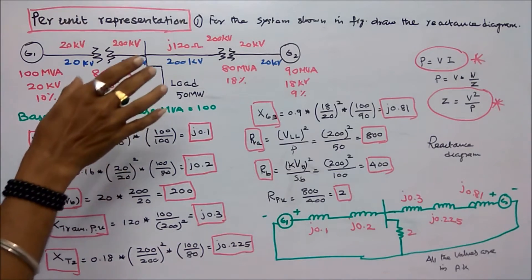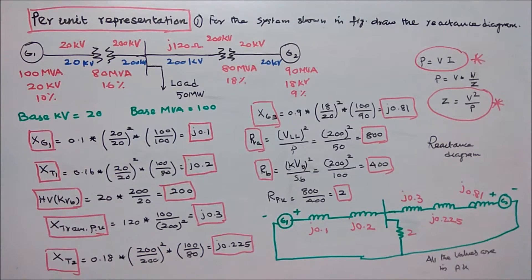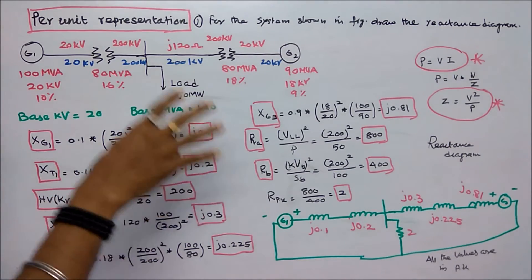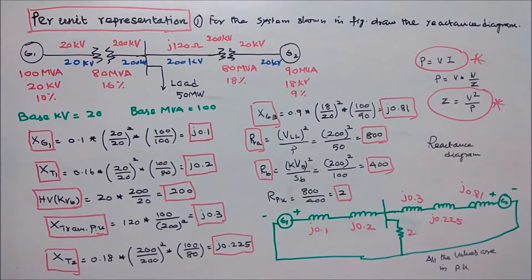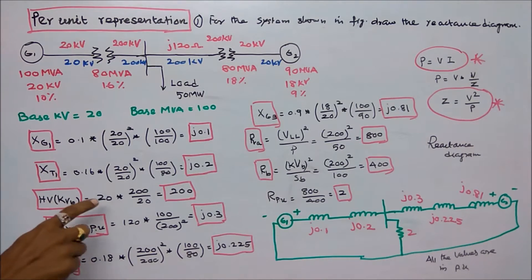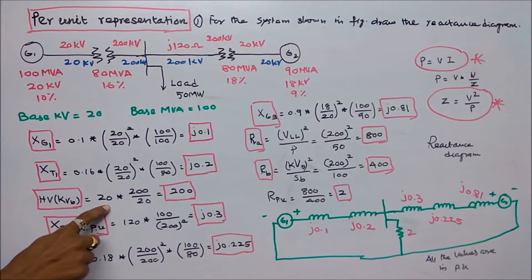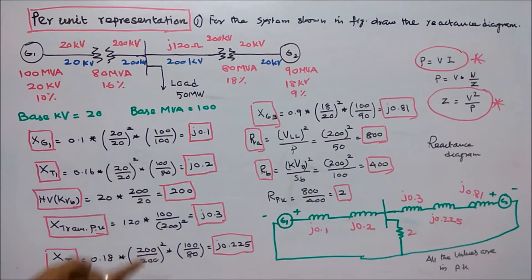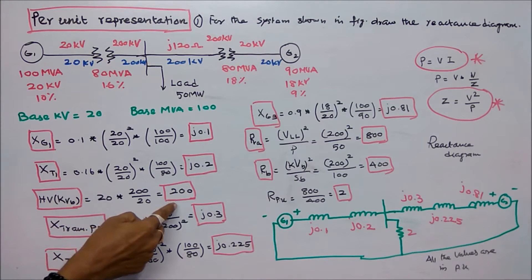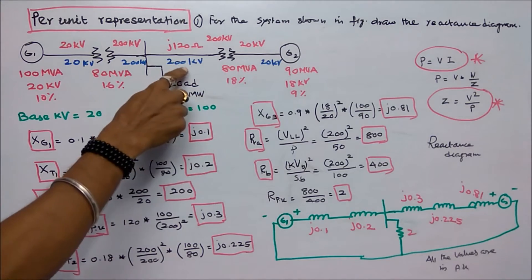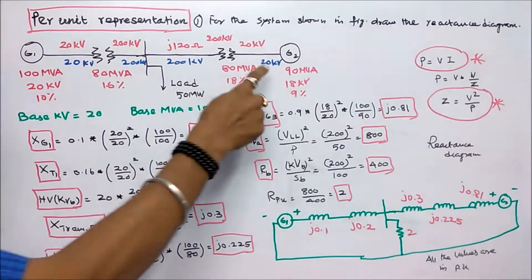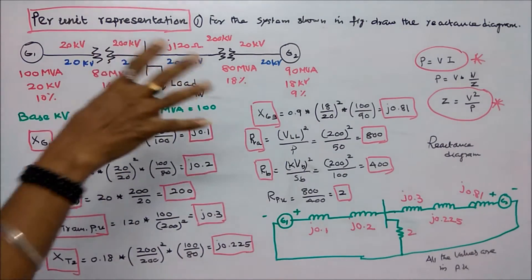The first step is to choose the base kV and base MVA. I choose base kV equal to 20 and base MVA equal to 100. The high-voltage kV base equals low-voltage kV base multiplied by the turns ratio (HT/LT = 200/20), therefore the high-voltage kV base is 200 kV. So this side is 200 kV and this side is 20 kV, marked in blue color.